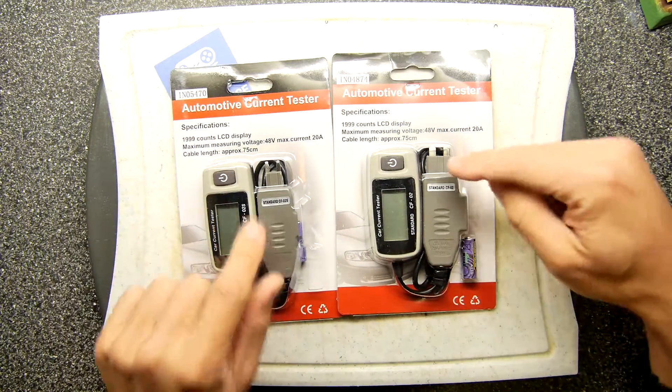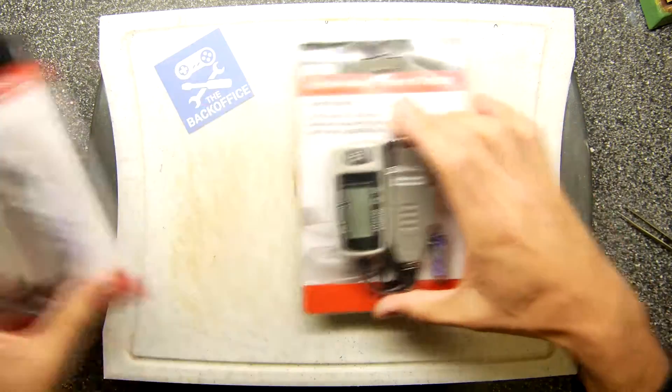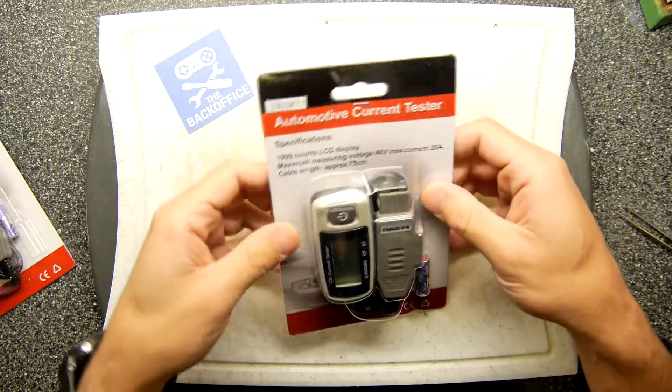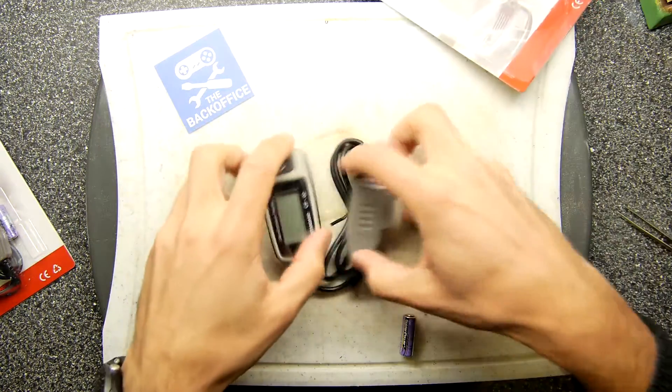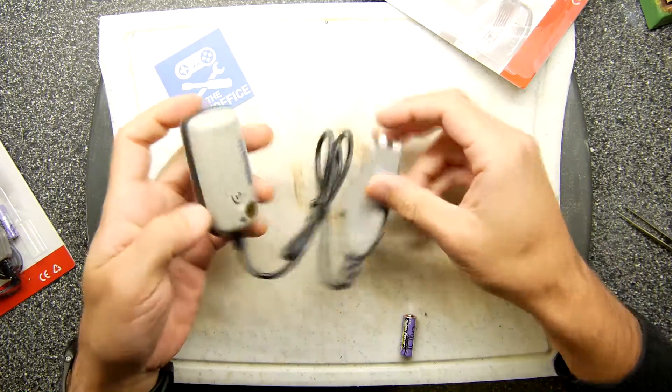They're both kind of the same thing. One's a bigger size than the other. That's all you need to know for now. These are automotive current testers and these allow you to actually measure the current going through the circuits in your vehicle via the fuses.